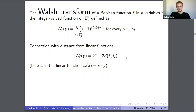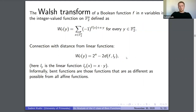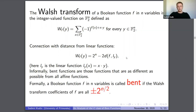Informally, bent functions are functions that are as different as possible from all affine functions. We can realize this through the Walsh transform: a boolean function is bent if all its Walsh coefficients are equal to plus or minus 2^(n/2). At first it's not obvious why this matches the informal definition.